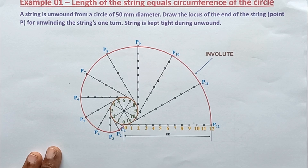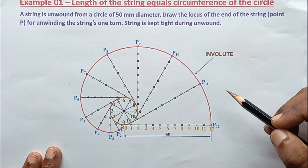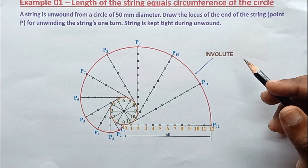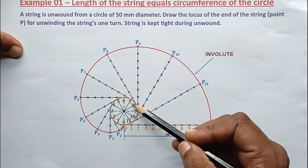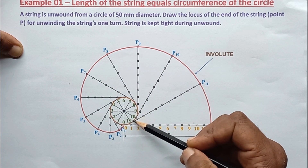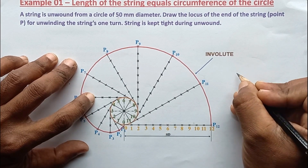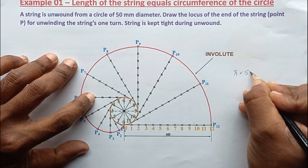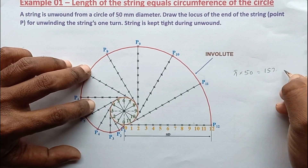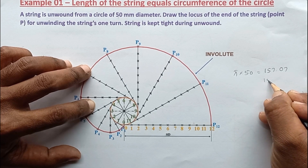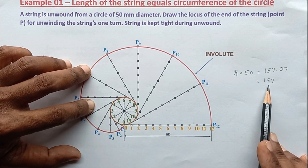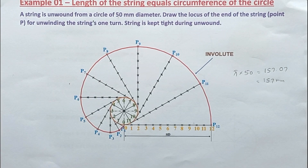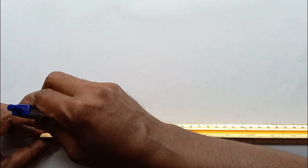Let's move to the example. The string unwinds from the circle, so first I'm going to draw a 50 millimeter diameter circle and divide this circle into 12 segments. The circumference length is π × 50, which equals 157.07 millimeters, so I'm going to round it to 157 millimeters. I take the compass and set it to 25 millimeters (the radius) to draw the circle.